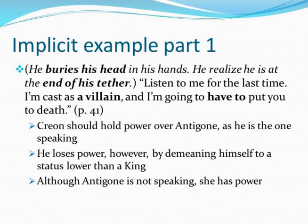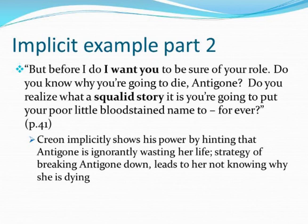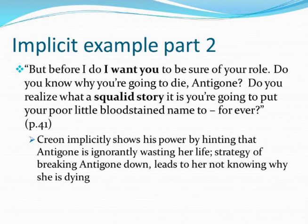Words like 'villain' and 'have to put you to death' weaken Creon as a character. Next, we will look at another example of implicit authority: 'But before I do, I want you to be sure of your role. Do you know why you're going to die, Antigone? Do you realize what a squalid story it is you're going to put your poor little blood-stained name to forever?' This passage implicitly shows Creon's authority. Although he is showing weakness, he is actually thinking ahead of Antigone — strategizing a way of persuading her to stop her foolishness. His power and authority is shown by the success of his plan, as Antigone becomes lost in her opinions and begins doubting herself.